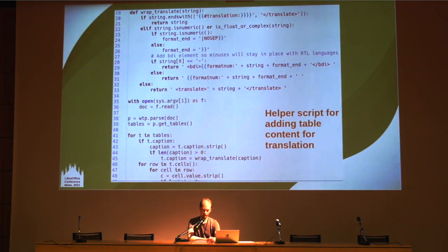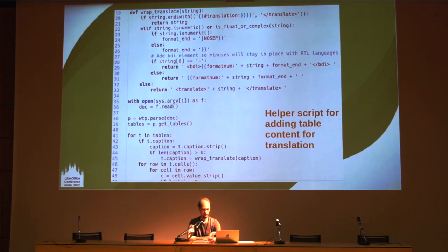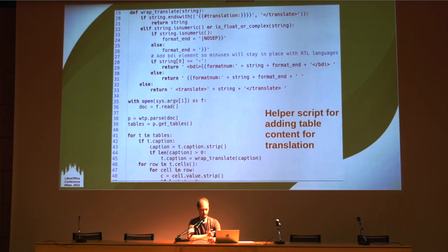When preparing the calc function articles for translation, the amount of repetitive work started to really get on my nerves. The articles often have tables which ideally need their cell content broken up into separate translation entries so translators don't need to look at distracting pieces of wiki markup. I went ahead and created a Python script to do this automatically. It works against the local text file and also handles numbers so they are not added for translation — and there are lots of numbers in those articles. It makes use of the very helpful wiki text parser library, and here is a snippet of the script which is available in the wiki guide for translators.